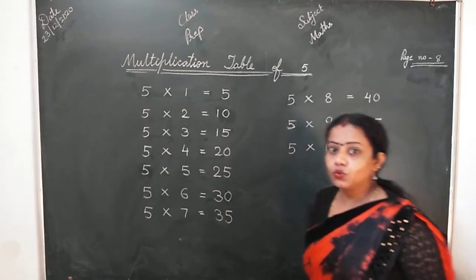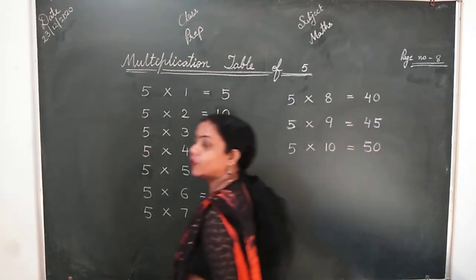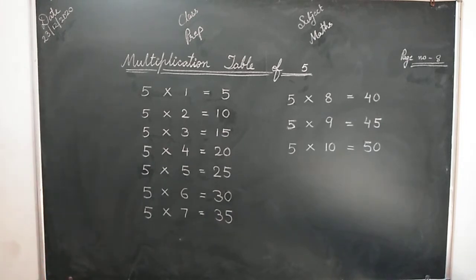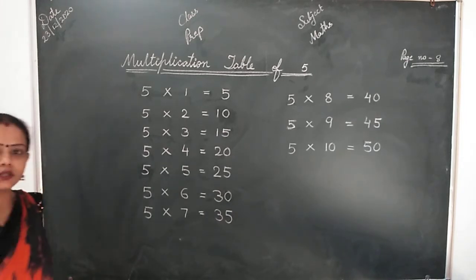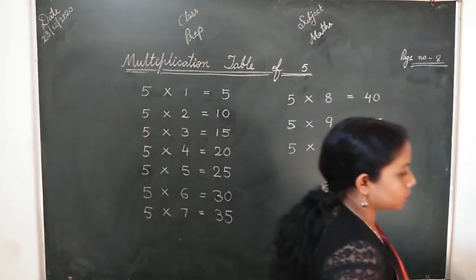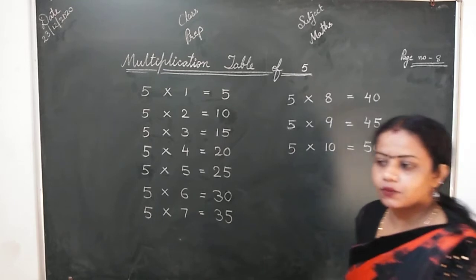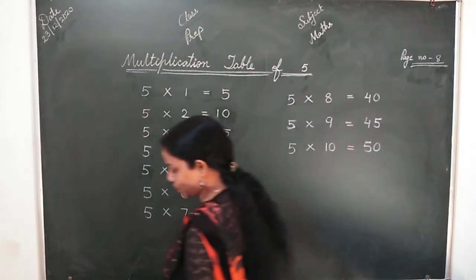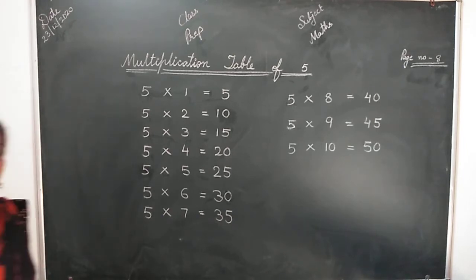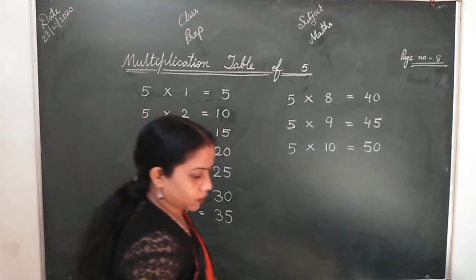Now, 2, 3 and now 4. 4, 1s are 4. 4, 2s are 8. 4, 3s are 12. 4, 4s are 16. 4, 5s are 20. 4, 6s are 24. 4, 7s are 28. 4, 8s are 32. 4, 9s are 36. 4, 10s are 40.